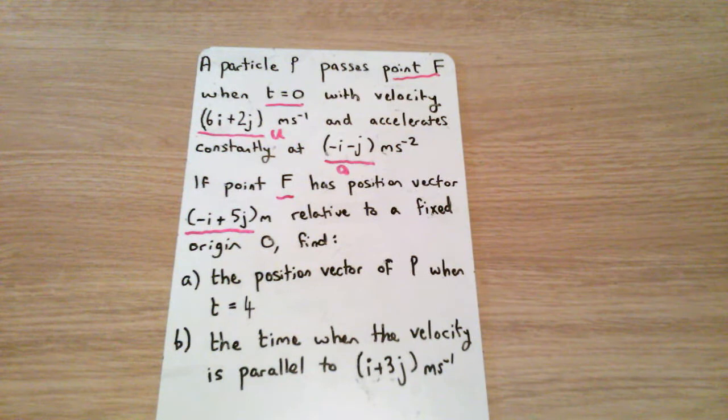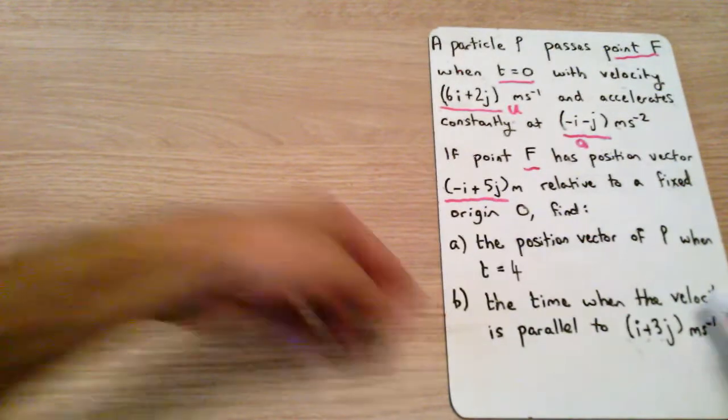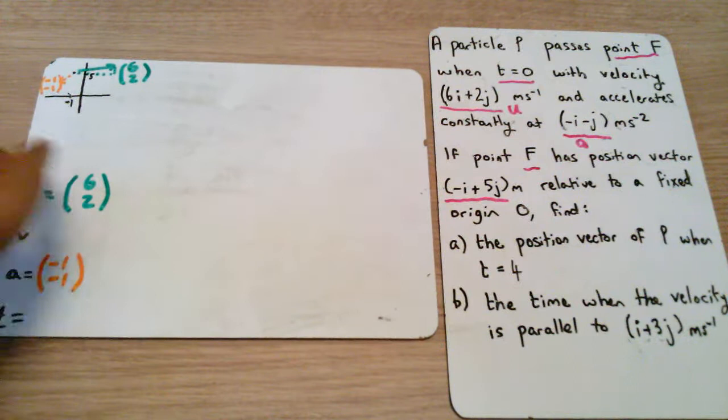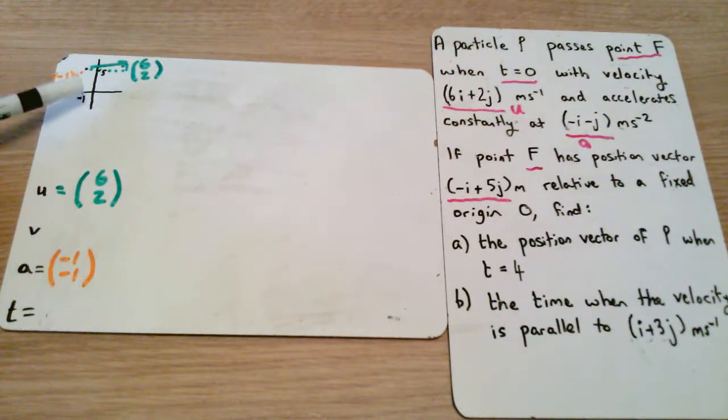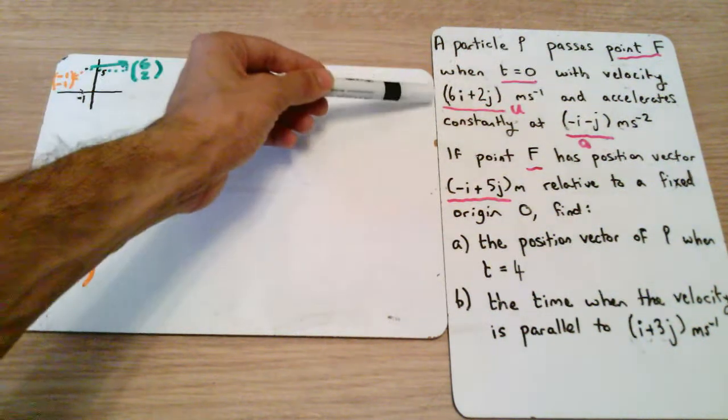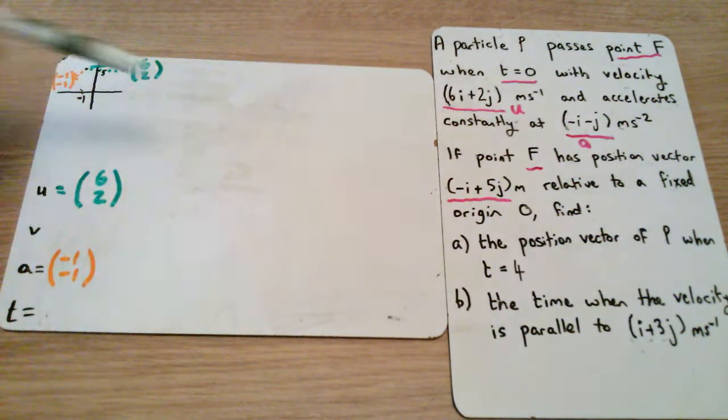Now to approach any question in vectors, it's always important to draw a diagram so we can see what is actually happening. If we look at this scenario, here is our little diagram. We have our particle over here at minus i plus 5j. It had an initial velocity of 6i plus 2j, and I've written this in column form because I think it's a little bit easier to follow, and it has an acceleration of minus i minus j, so minus 1 and minus 1.